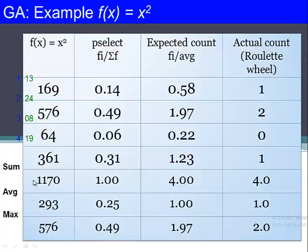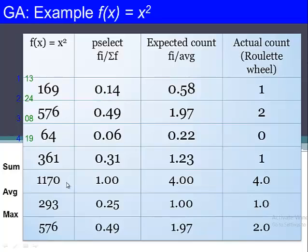The sum of all fitness values is 1170, the average is 293, and the maximum fitness value is 576. The probability of selection for the next generation is calculated by dividing each individual's fitness value by the total sum: 169/1170 = 0.14, 576/1170 = 0.49, 64/1170 = 0.06, and 361/1170 = 0.31, which sums to 1.